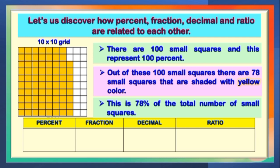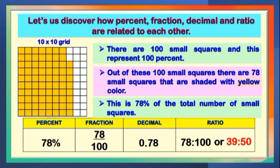The shaded portion of the 10 by 10 grid is 78%. The equivalent fraction is 78 out of 100. The equivalent decimal is 0 and 78 hundredths. The equivalent ratio is 78 is to 100. And since the ratio is always expressed in lowest term, the lowest term of this is 39 is to 50.